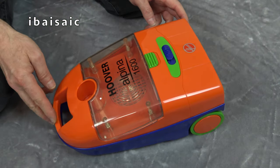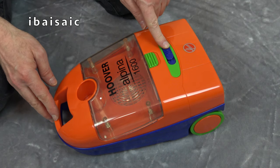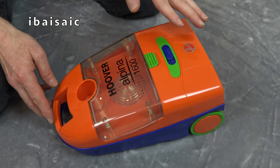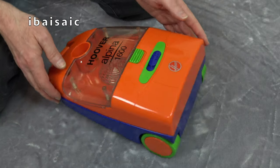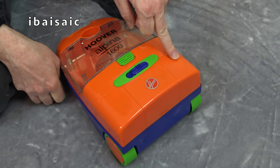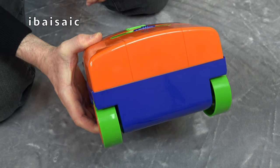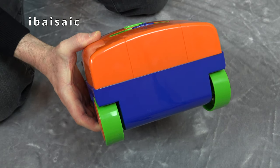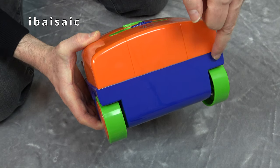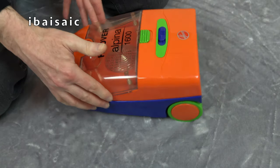But, on this toy Hoover Alpina, the on-off switch is a slider control here, whereas on the real thing, that would have been an electronic speed control on certain models. And here, we would have had on-off switch and automatic cord rewind. Not quite as detailed as some of the later Theo Klein models. A bit more basic on this one.